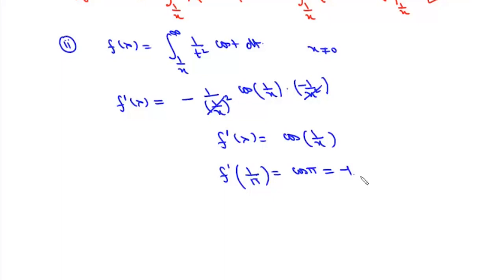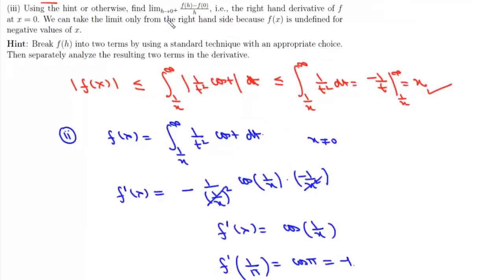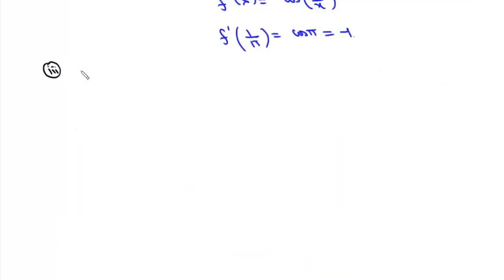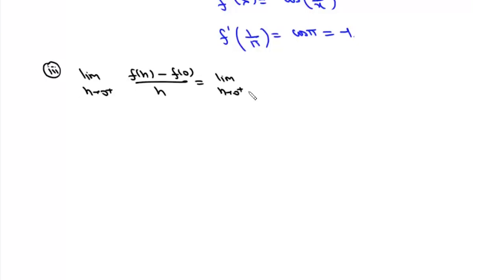The third part asks us, using the hint or otherwise, to find the limit as h → 0⁺ of [f(h) − f(0)] / h. The question states f(0) = 0, so we need to evaluate lim(h→0⁺) f(h)/h, where f(h) = ∫(1/h to ∞) (1/t²)cos(t) dt.